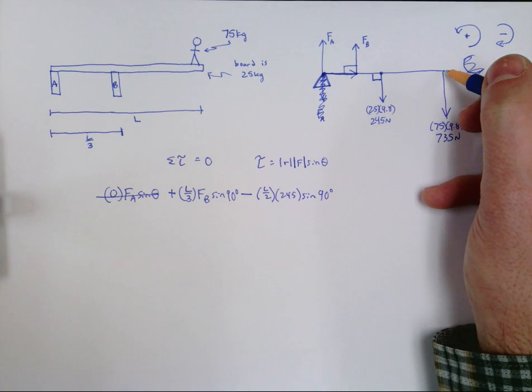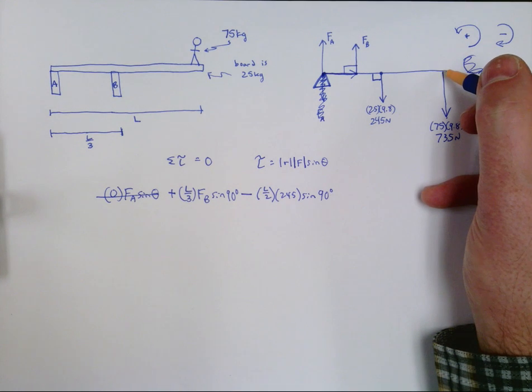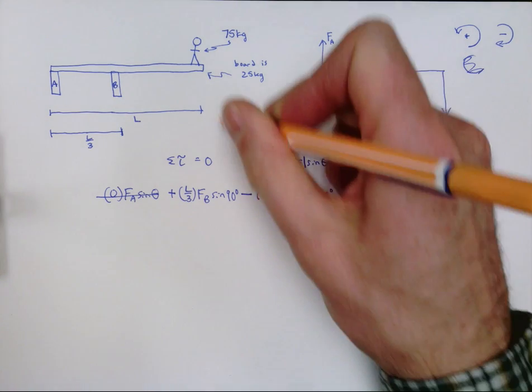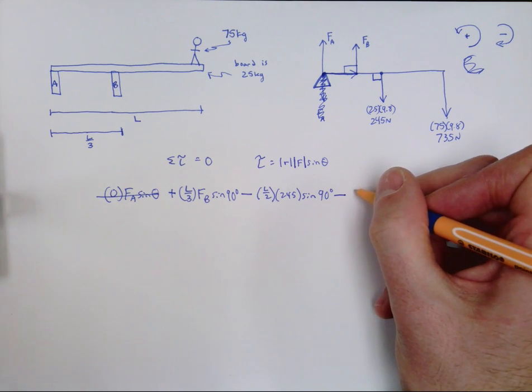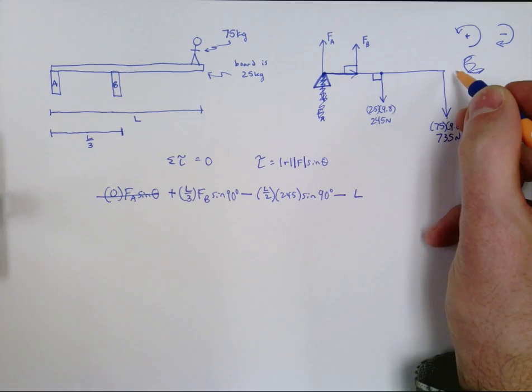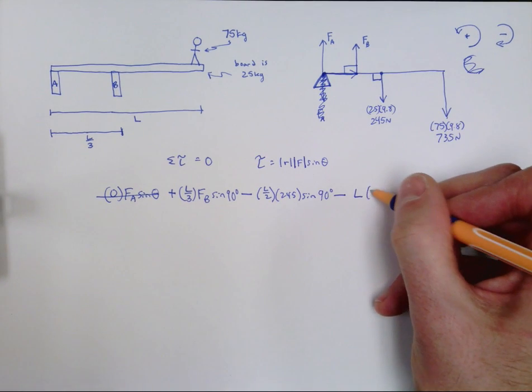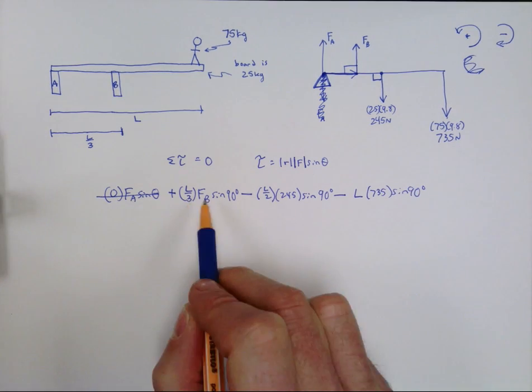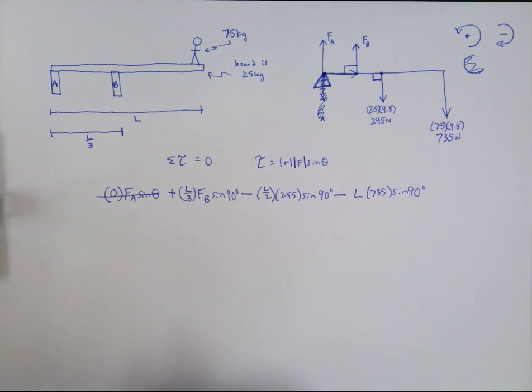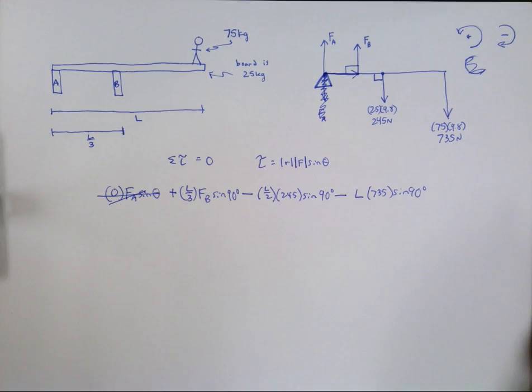Lastly, we get to the torque due to the person. That would have a tendency to make this go clockwise, so it's a negative torque. The radius is all the way at the end, L. The force is 735, and then sine of 90. So those are our four torques, although this one actually isn't exerting any torque.